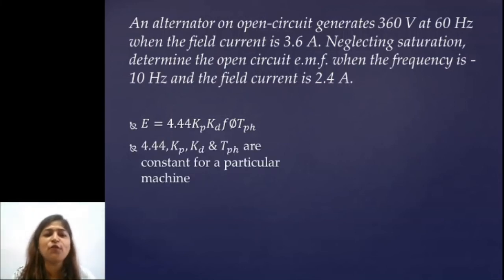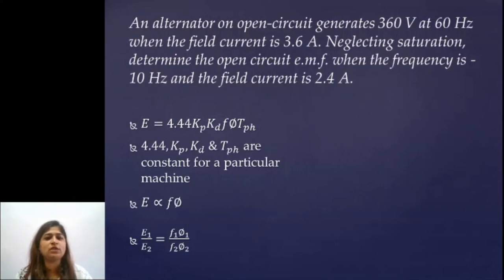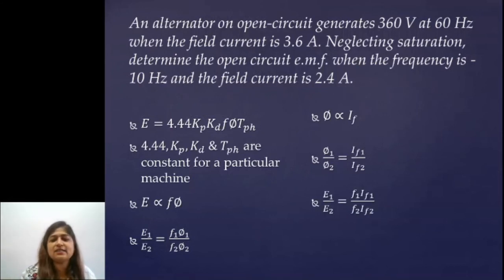As I told you 4.44 Kp Kd and Tph are constant for a particular machine. E is proportional to product of frequency and flux. But flux which is produced because of field current is proportional to field current. So we will take the ratio E1 by E2 where E1 is the case which is given first and E2 is what we need to find. So E1 by E2 equals F1 Φ1 by F2 Φ2. Now Φ is proportional to field current, so we can write Φ1 by Φ2 equals IF1 by IF2. Now I will replace Φ1 by Φ2 by IF1 by IF2 in E1 by E2 and substitute all values.